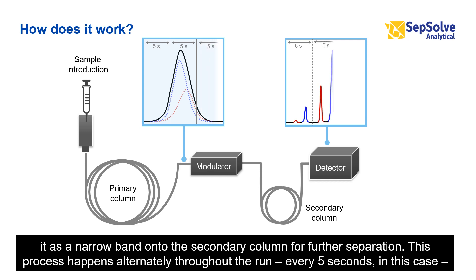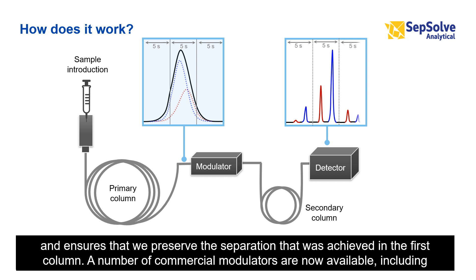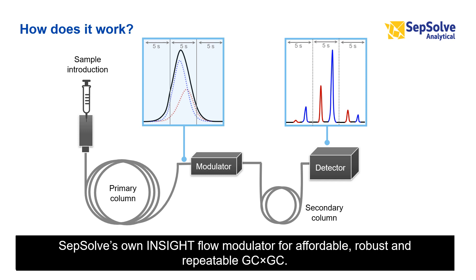This process happens alternately throughout the run — every 5 seconds in this case — and ensures that we preserve the separation that was achieved in the first column. A number of commercial modulators are now available, including Sepsolve's own InSight Flow Modulator, for affordable, robust and repeatable GC×GC.